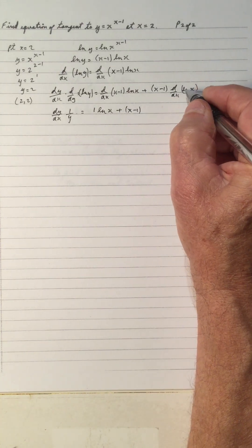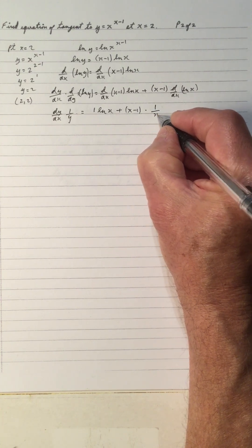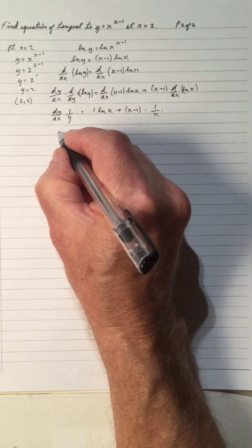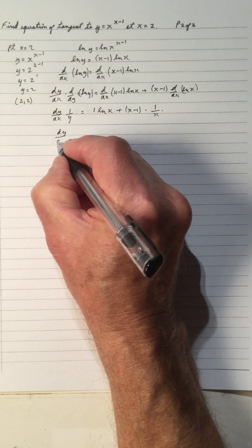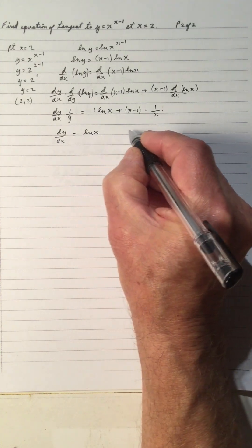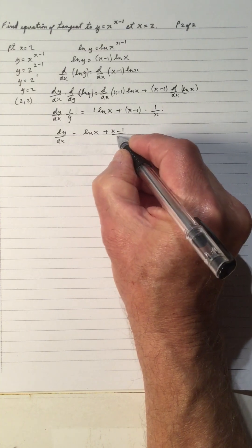So that's 1 times ln x plus x minus 1. And the derivative of ln x in terms of x is 1 over x. And derivative of x is 1. So that gives us dy dx equals ln x plus x minus 1 over x.